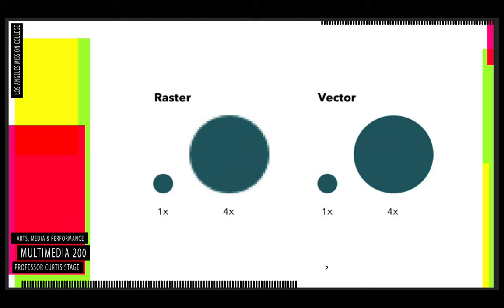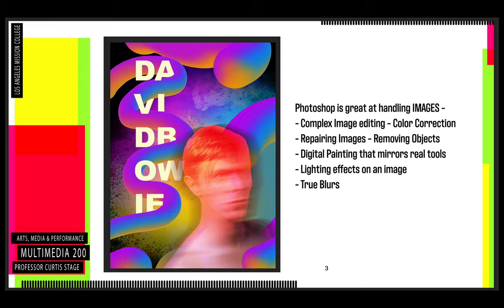When you see a raster-based image — a photograph — it is made up of a bunch of little squares, and those squares are filled with pixels. When you see a vector-based image on a computer, it is not that. Going back into Photoshop: what are the strengths of Photoshop? Photoshop is great at handling images. As you've figured out this whole semester, it's for complex image editing and color correction.